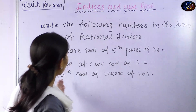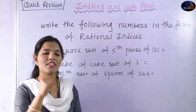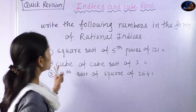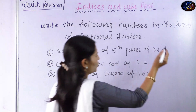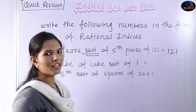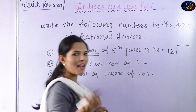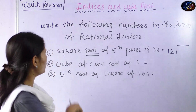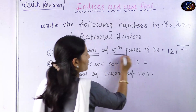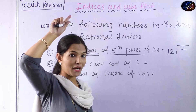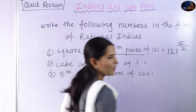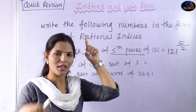Next question: write the following numbers in the form of rational indices. For example, the square root of the 5th power of 121. Square root means 2 goes to the denominator, and the 5th power means 5 goes to the numerator. So the answer is 121 raised to 5 upon 2. Remember: the root goes to the denominator, and the power goes to the numerator.